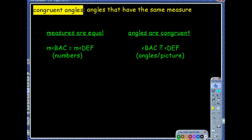When we talk about congruence, we're talking about their pictures. So their measures are equal. When you see we have measures are equal, then the angles are congruent. Now be careful with this notation.